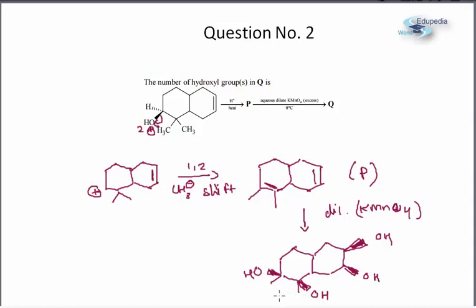And how many OH groups, that is fairly simple. There will be a total of 4 OH groups in the final product that is Q.